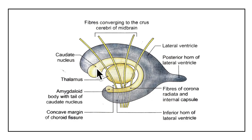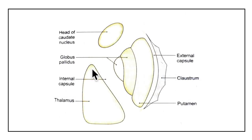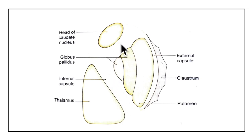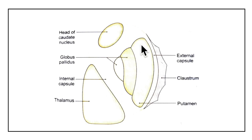The head of the caudate nucleus forms the floor of the anterior horn of the lateral ventricle. In the horizontal section, the head of the caudate nucleus forms the medial wall of the anterior limb of the internal capsule. There are bands of grey matter that connect the head of the caudate nucleus to the putamen across the anterior limb of the internal capsule near the anterior perforated substance.